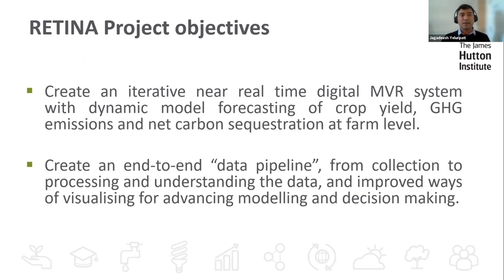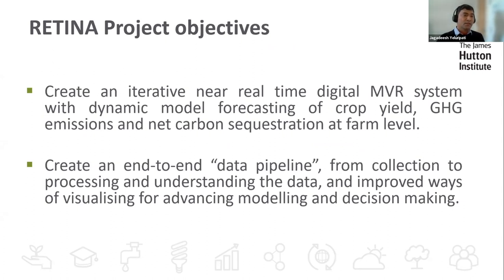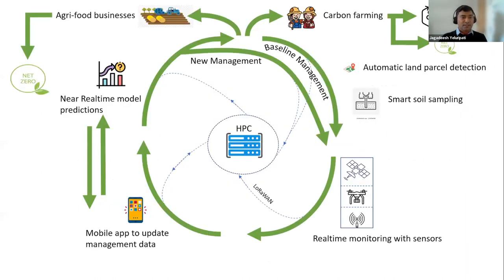The overall objective of RETINA is to create an integrated near-real-time digital monitoring, verification, and reporting system that forecasts crop yield, greenhouse gas emissions, and carbon sequestration at the farm level. This will also create an end-to-end data pipeline from collection through processing and understanding the data, improving visualization, advancing modeling, and supporting decision making.